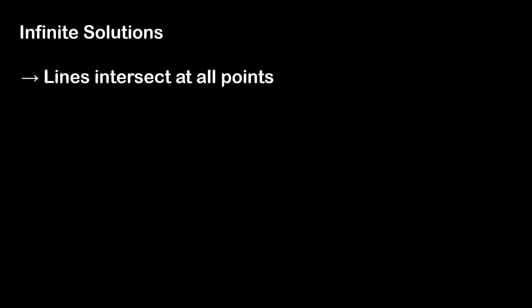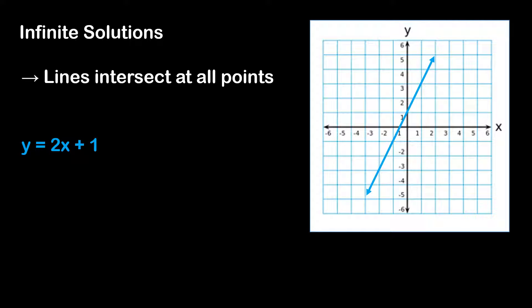So let's consider this first equation: y is equal to 2x plus 1. I'm going to graph this equation on a grid. And now we will consider another equation: y is equal to 2x plus 1 — the same equation. If we graph that line, obviously it is going to appear in the exact same location. We will see here that because these lines are the same, they intersect at all points, and therefore they have an infinite number of solutions.